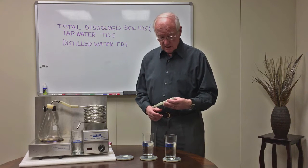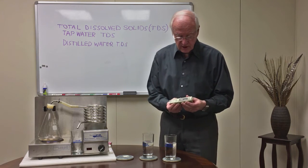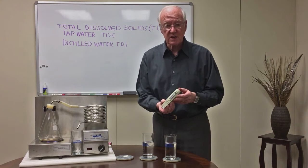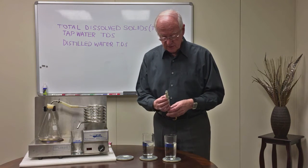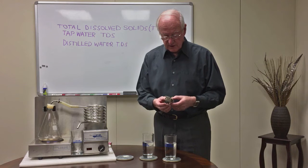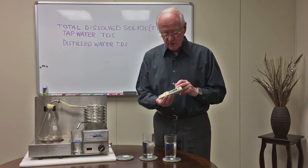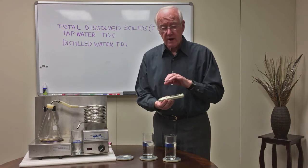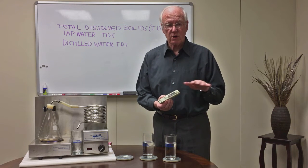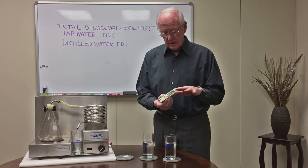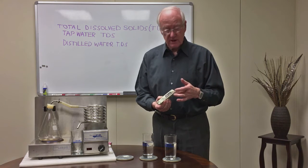And I'm going to show you that right now. Here is a total dissolved solid meter — a TDS meter. It's a very simple device. It's battery operated. It's got two electrodes down there. And even with the battery on and the electrodes there, if there's no way for electrons to move between the electrodes, you get a zero reading.